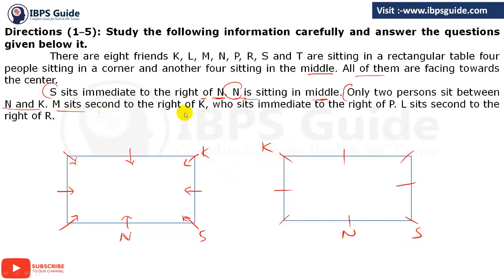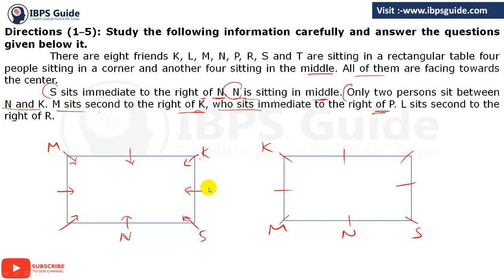M sits second to the right of K. So if K is here, M must come here; and in the other case, if K is here, M must come here. Also, K sits to the immediate right of P — so P must come immediately left of K in both cases.